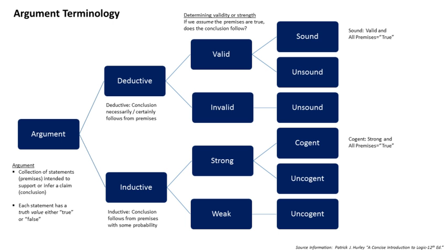Argumentation schemes have been developed to describe and assess the acceptability or the fallaciousness of defeasible arguments. Argumentation schemes are stereotypical patterns of inference, combining semantic-ontological relations with types of reasoning and logical axioms, and representing the abstract structure of the most common types of natural arguments. The argumentation schemes provided in Walton, Reed and McCagno 2008 describe tentatively the patterns of the most typical arguments. However, the two levels of abstraction are not distinguished. Under the label of argumentation schemes fall indistinctly patterns of reasoning such as the abductive, analogical, or inductive ones, and types of argument such as the ones from classification or cause-to-effect.